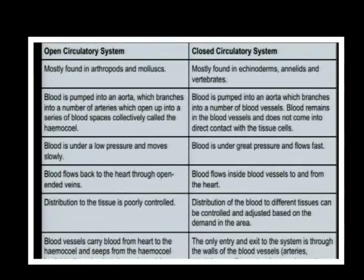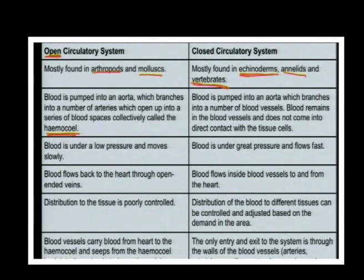You must know the difference between an open and a closed circulatory system. An open circulatory system is found mostly in arthropods and mollusks - blood is pumped into an aorta which branches into arteries and then into an open series of spaces, collecting in the haemocoel. In a closed system - found in echinoderms, annelids, and vertebrates - blood is pumped into an aorta and remains in the blood vessels.